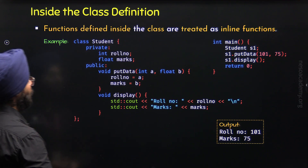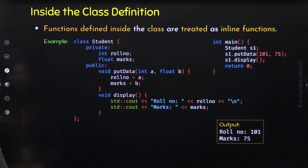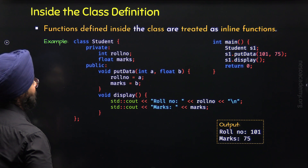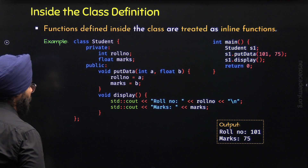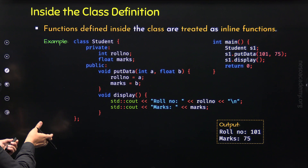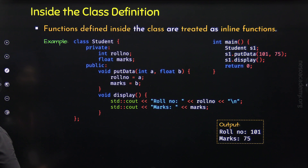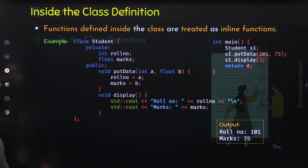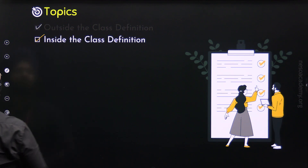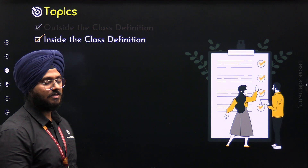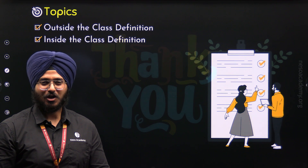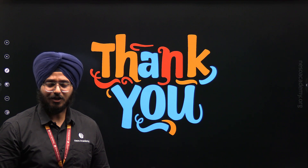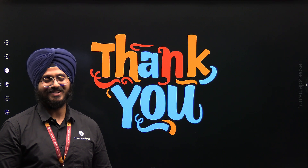So now we know two different ways to define member functions of a class. We can define them outside the class with the help of the scope resolution operator, or we can directly define them inside the class. With this, we have understood both topics and we are done with this lecture. Thank you for watching, I will see you in the next one.